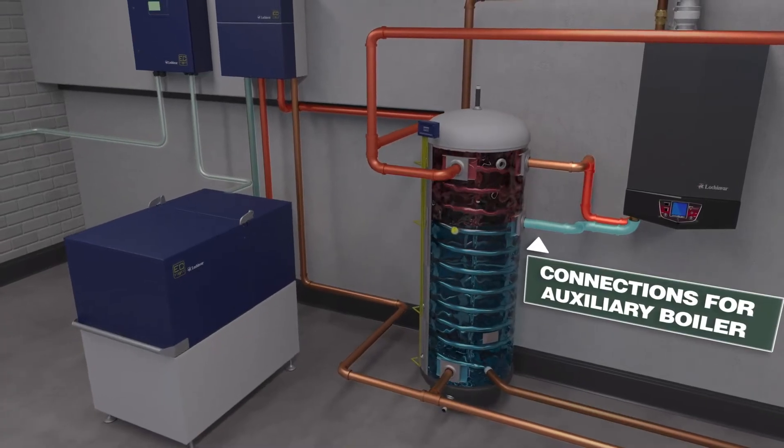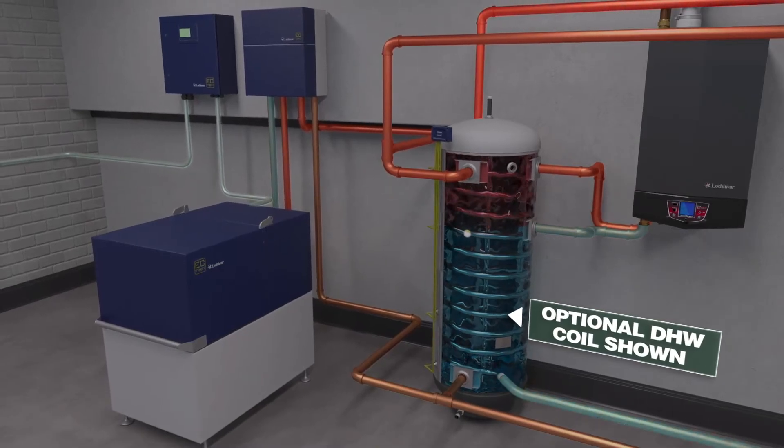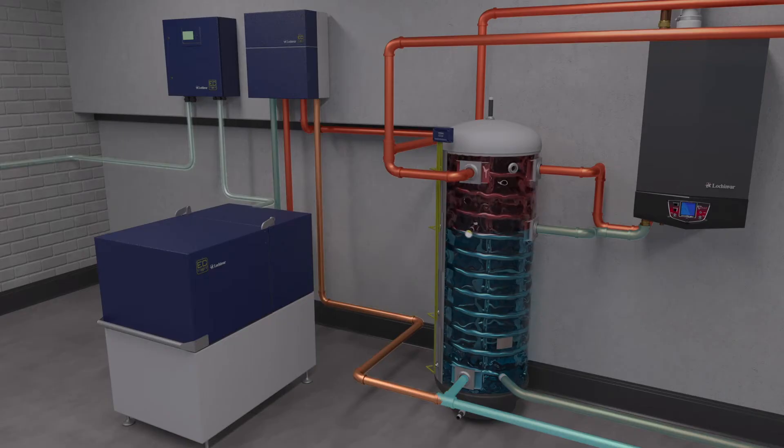This system is also ideal for supplying domestic hot water. Return water is piped to the bottom of the storage tank, where the heat distributor draws water as needed to cool the power unit and begin the cycle again.